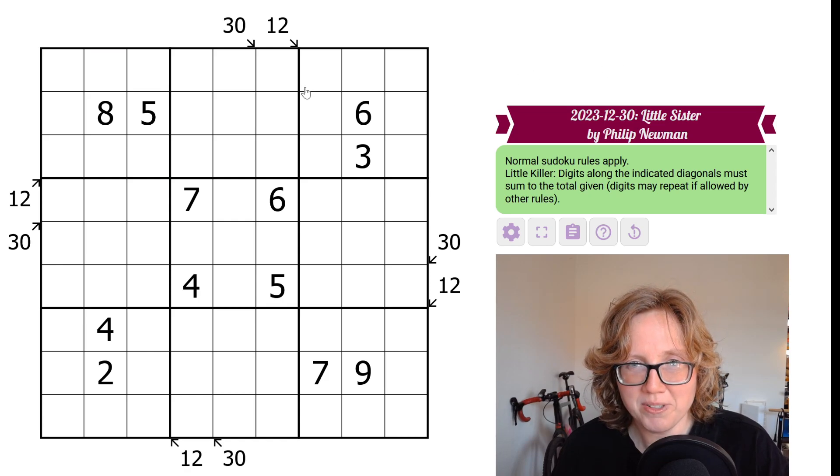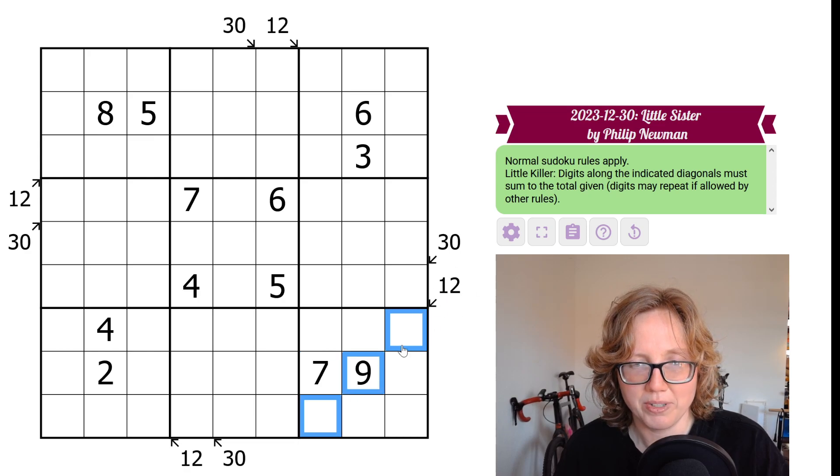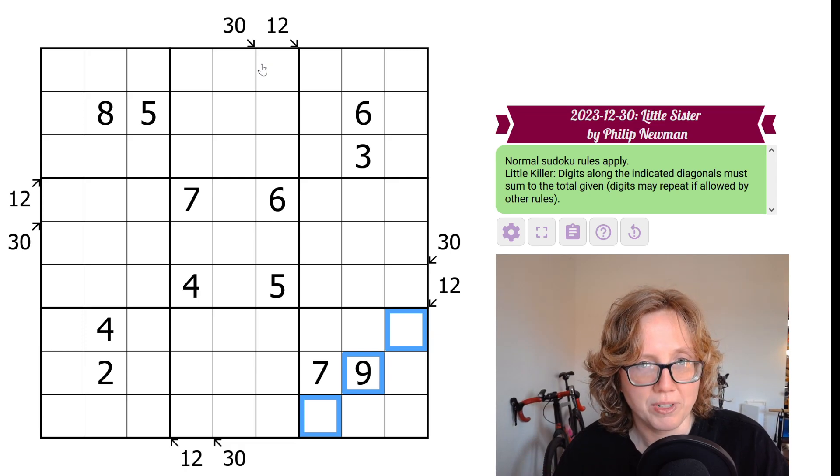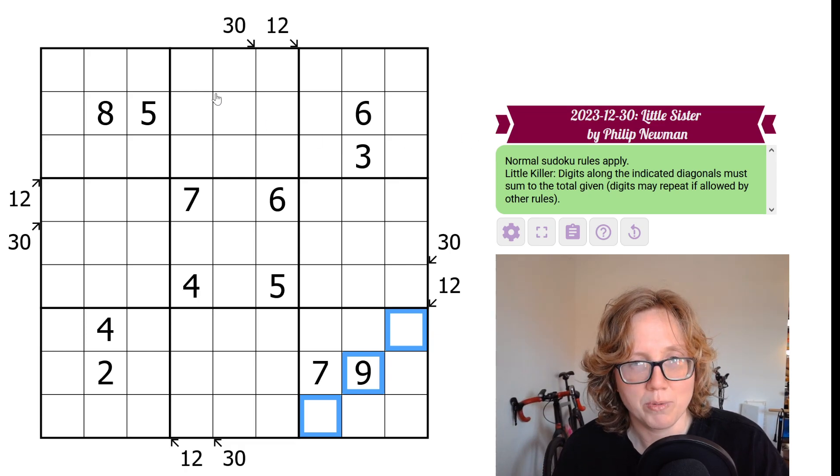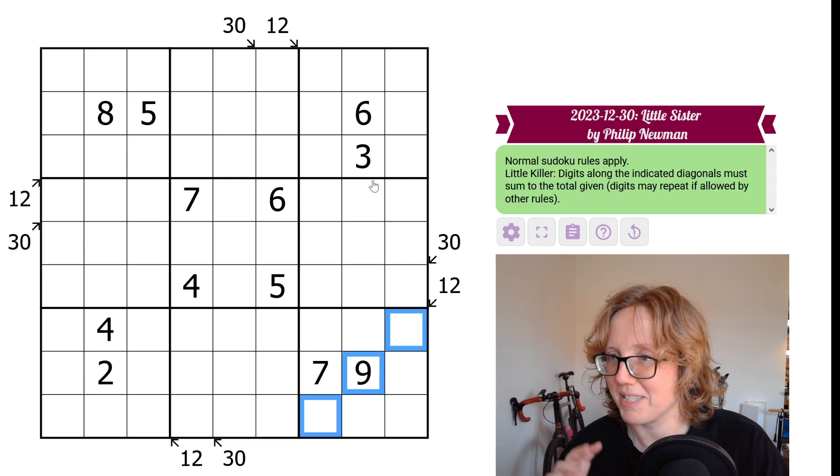We also have little killer rules. Some diagonals have an arrow with a clue value pointing to them. The digits along each marked diagonal, like for instance here, sum to whatever the clue total is. So these three cells, whatever is in them, has to sum to a total of 12. Unlike killer Sudoku, which uses cages and has a no repeats in cages rule, little killer Sudoku allows you to repeat digits along these diagonals as long as they don't break Sudoku rules, and we'll be pointing out some situations where that happens in this puzzle.